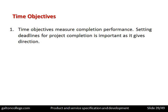Time objectives measure completion performance. Setting deadlines for production completion is important as it gives direction — jobs should not be issued without a timescale. Customers are waiting at the end and have expectations of receiving products within a reasonable timescale. Each task should have an achievable, realistic timescale worked out by the organisation. Departments may be in sequence, each knowing the handover date because it's written on the job.